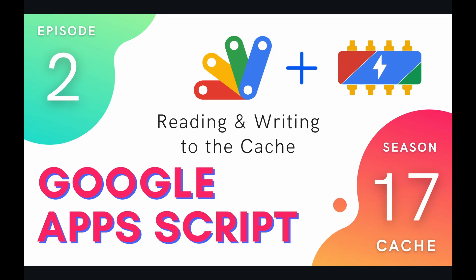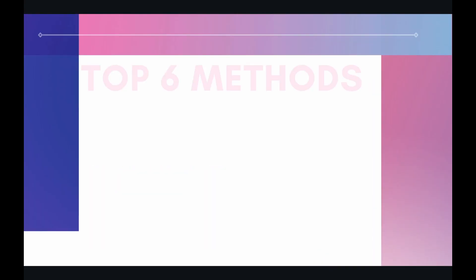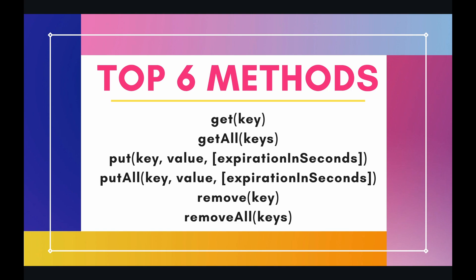Hey coders, welcome to episode 2 of our Cache Service Playlist on the Google Apps Script course. In this episode we're going to be learning how to read and write to the cache. Our top 6 methods for today are: get, get all, put, put all, remove, and finally remove all. Let's hop on over to the code editor and see these methods in a demonstration.